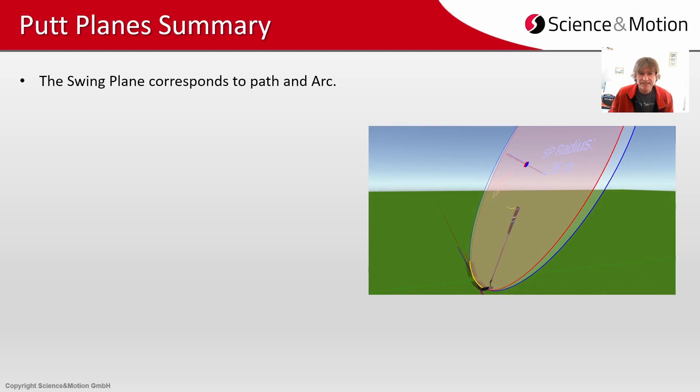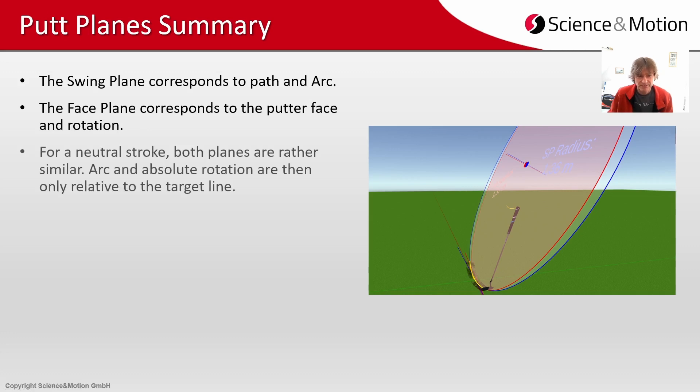Now in summary we can say that the swing plane corresponds to path and arc. The face plane corresponds to the putter face rotation, both against the target line. For a neutral stroke both planes are rather similar. Arc and absolute rotation are then only relative to the target line and are the same.